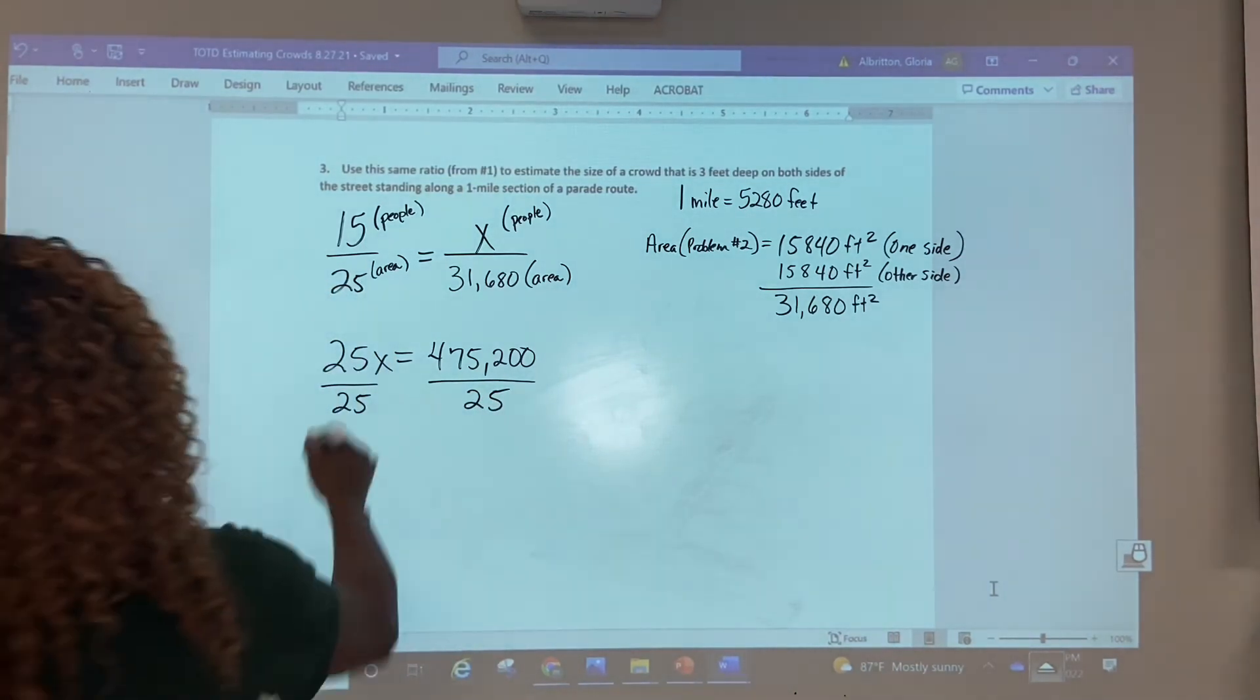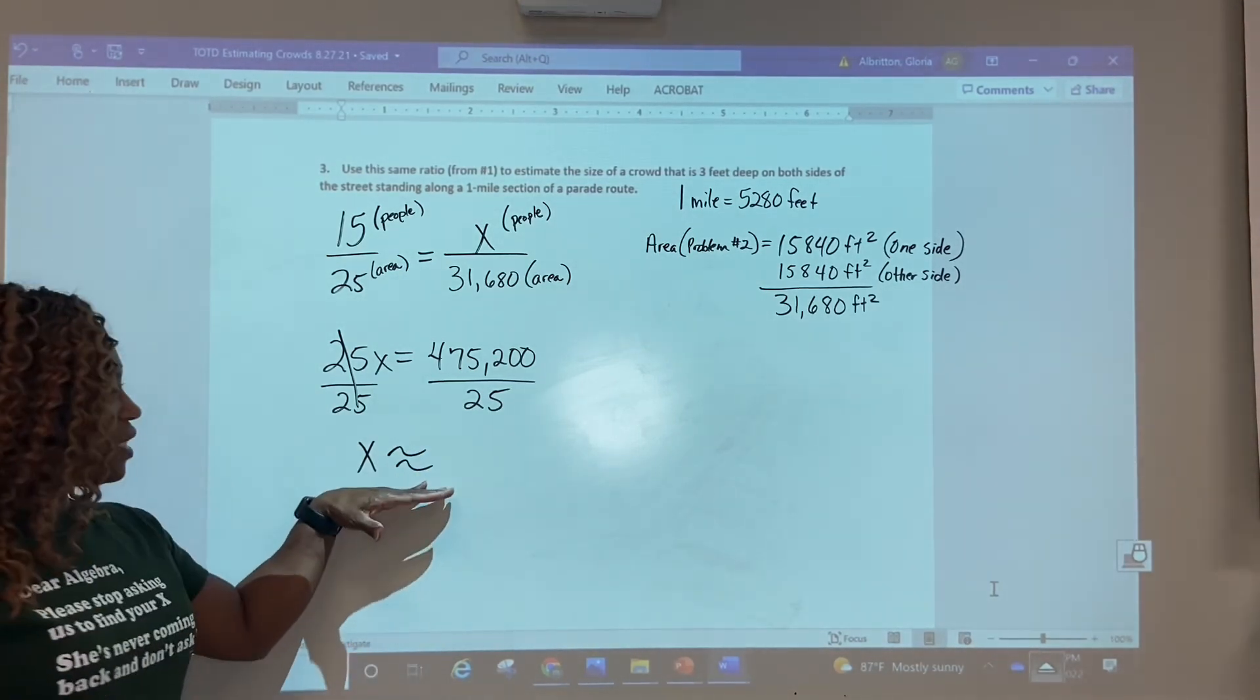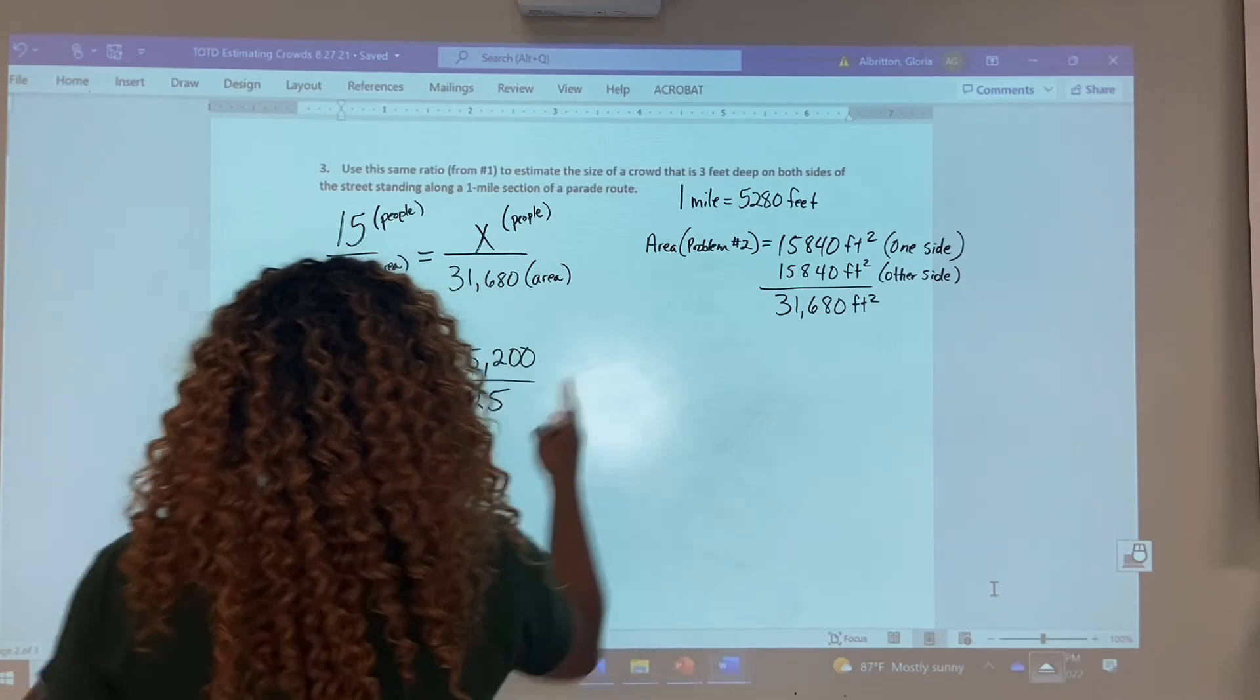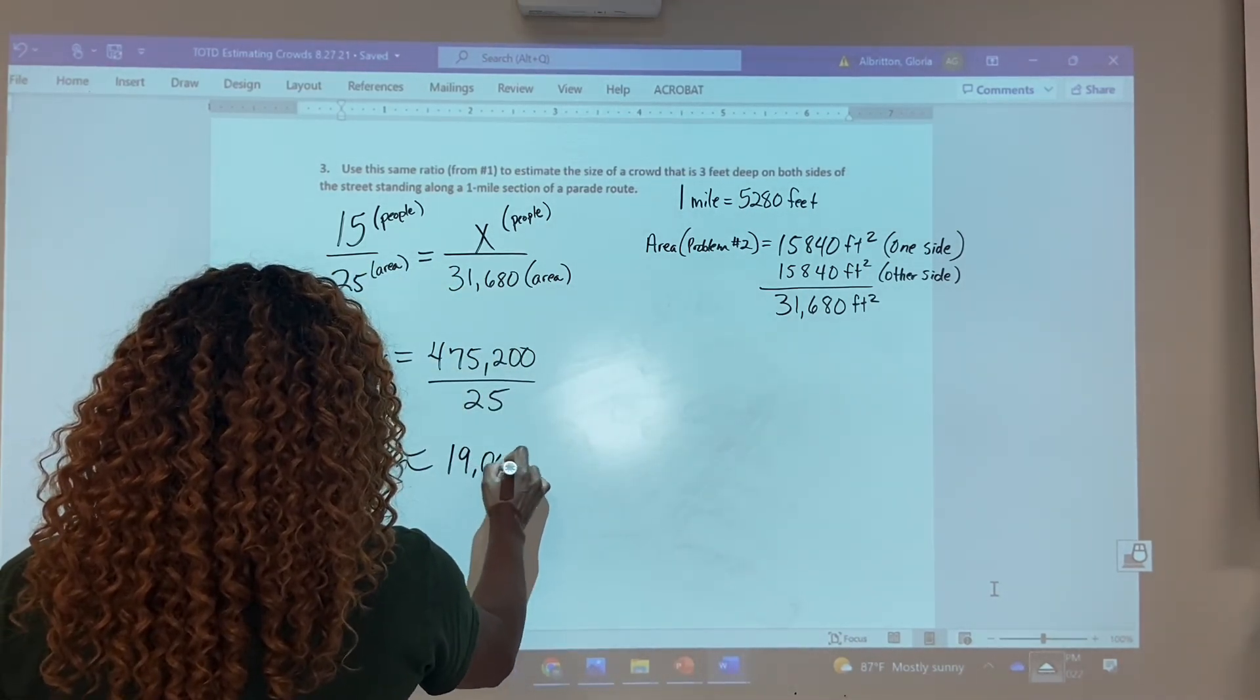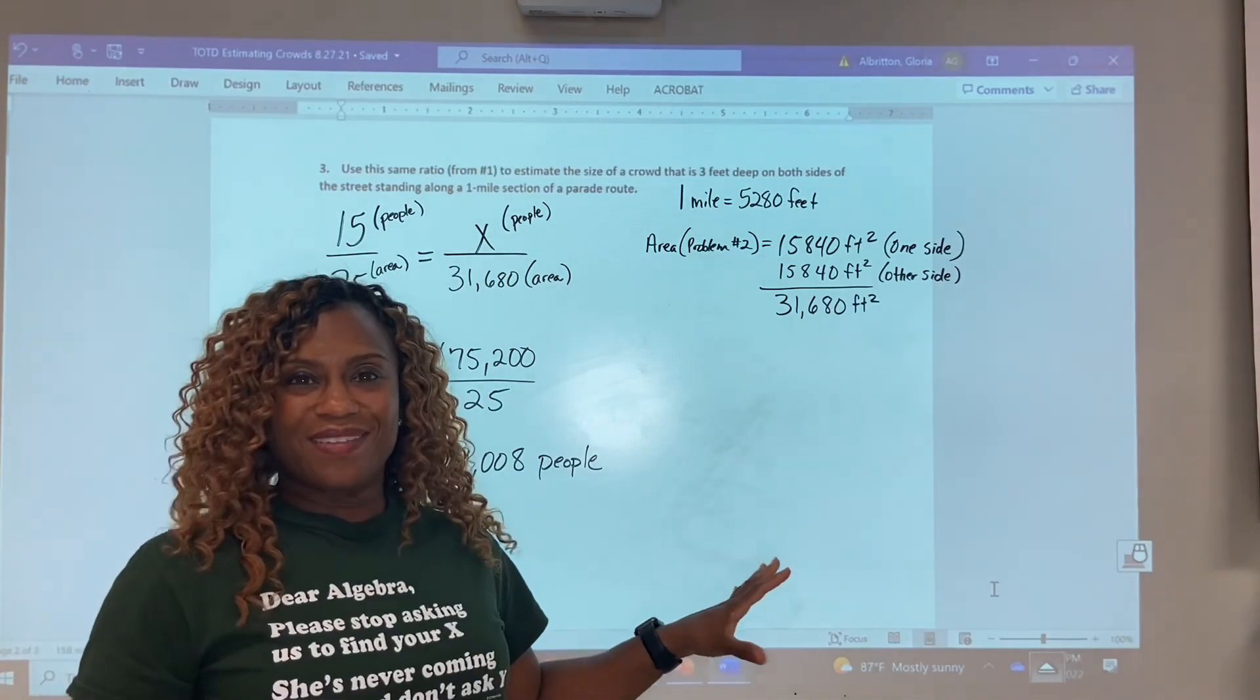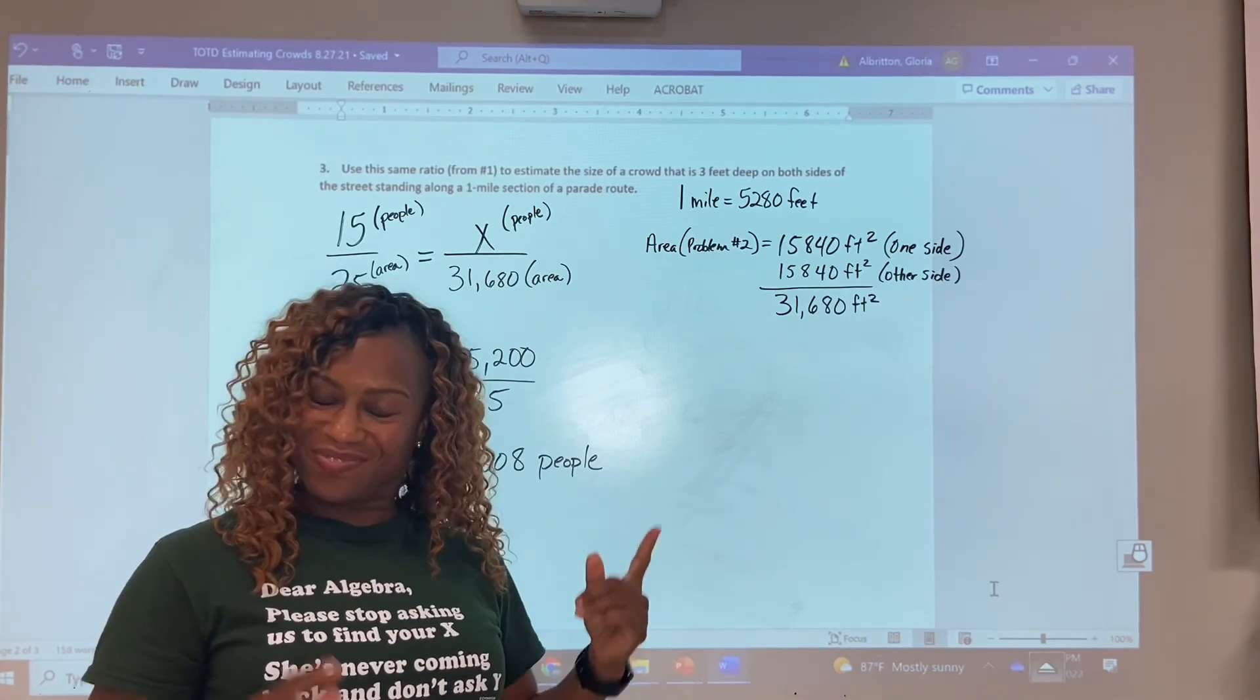And this is a one-step equation. So when we solve that, we're going to get that x is approximately, remember, I'm using this symbol. That means approximately equal to or about. That's an estimate. So this two sides of the street will hold approximately 19,008 people. So we have estimated the crowd for that parade for two sides of the street on a one-mile section. All right. Good job.